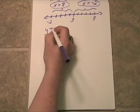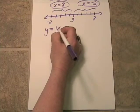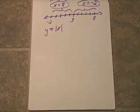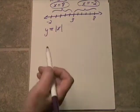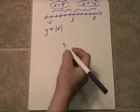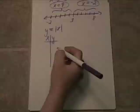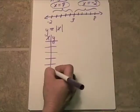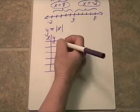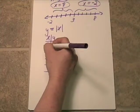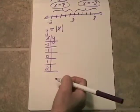Here we have y is equal to the absolute value of x. That's the simplest absolute value equation in the world. We want to determine whether or not it is a function. Let's make a little chart and let's take several values here. Let's do some negatives and some positives. How about negative 2, negative 1, 0, 1, and 2.